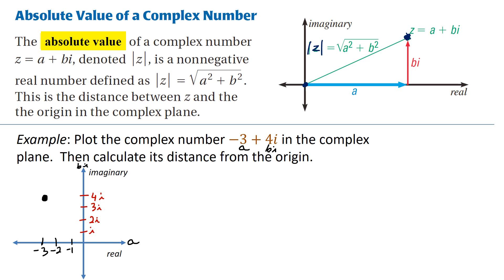And now we're going to calculate its distance from the origin. The formula should remind you of working with the Pythagorean theorem. If you look at the formula, the formula says that we take the square root of the a term squared plus the b term squared.